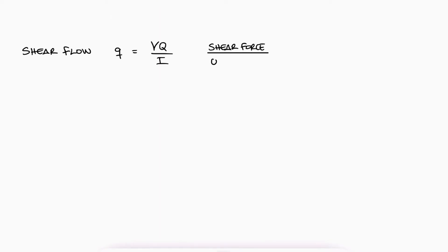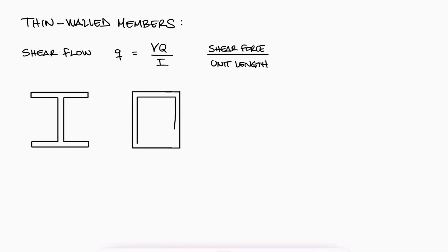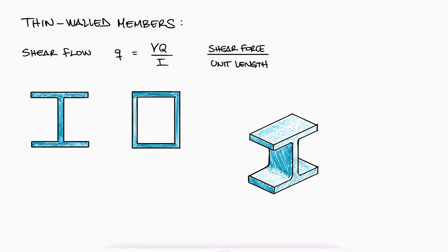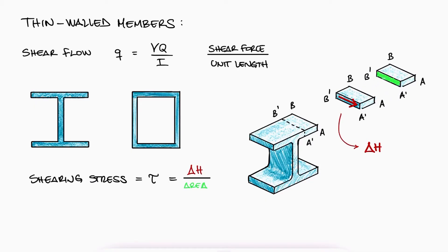This shear flow concept is also helpful to calculate stresses in thin-walled members. Thin-walled members just refer to the cross-section areas of beams that are composed of thin sections, like for example an I-beam or a thin-walled square beam called a box beam. Since the shearing force delta H will arise from any cut we perform of any arbitrary shape out of any beam, whatever its cross-section area shape is, we can calculate the shearing stress caused by that delta H if we divide it by the area that that delta H is affecting.